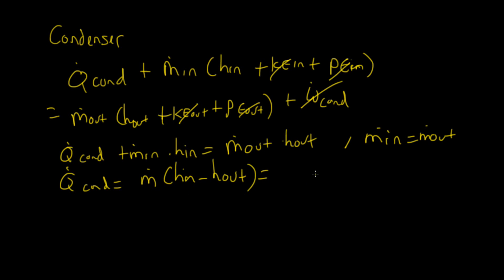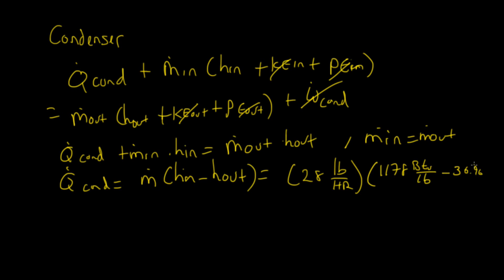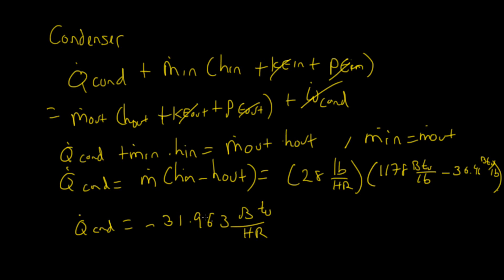Plugging in the numbers: mass flow rate is 28 pounds per hour, H_in is 1178 BTU per pound, H_out is 36.46 BTU per pound. This gives Q_condenser equal to minus 31,963 BTU per hour. It's negative because the heat is coming out — exactly what we should be seeing.